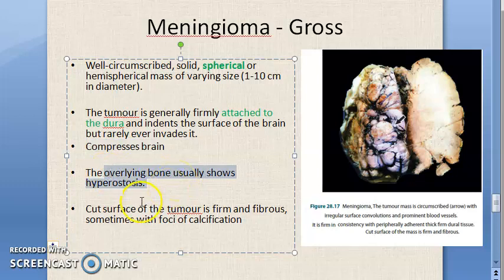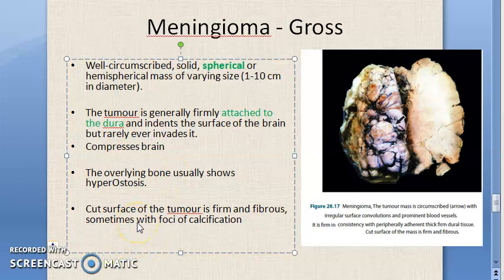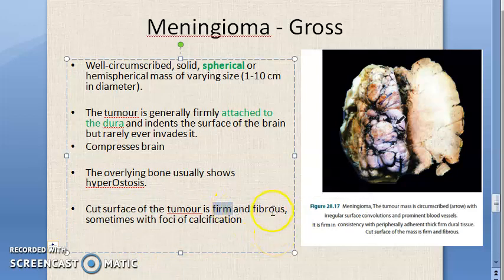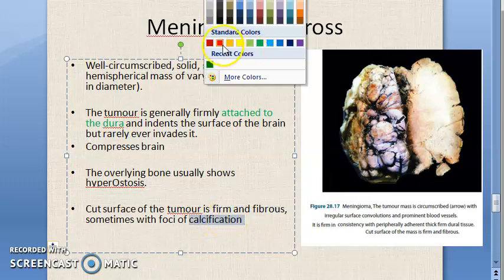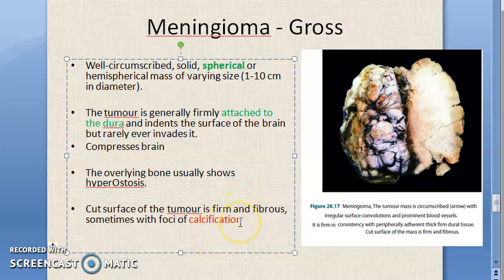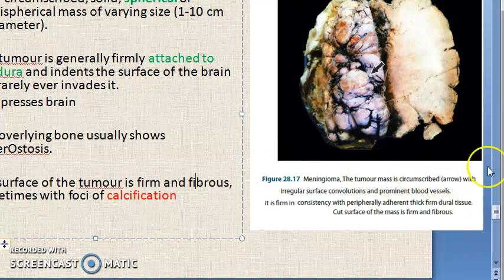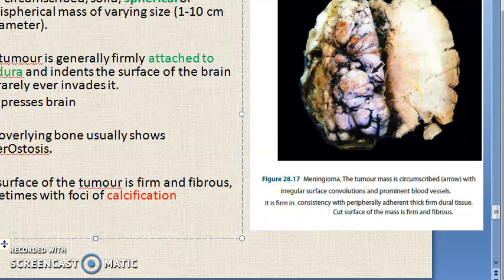The overlying bone usually shows hyperostosis - meaning more bone cells - so the skull above the tumor shows increased bone formation. Below, the brain is being compressed but not invaded. The cut surface shows a firm fibrous texture, sometimes with foci of calcification. Looking at the image, the tumor mass is circumscribed with an irregular surface, prominent blood vessels, and adjacent thick firm dural tissue.